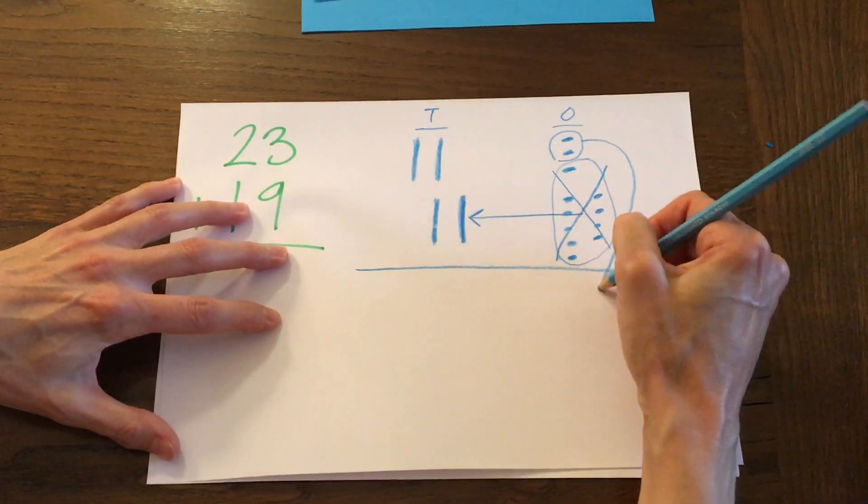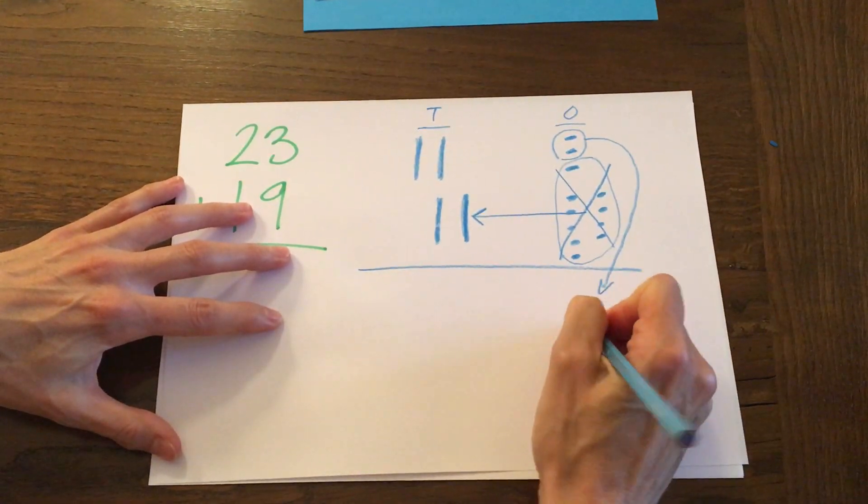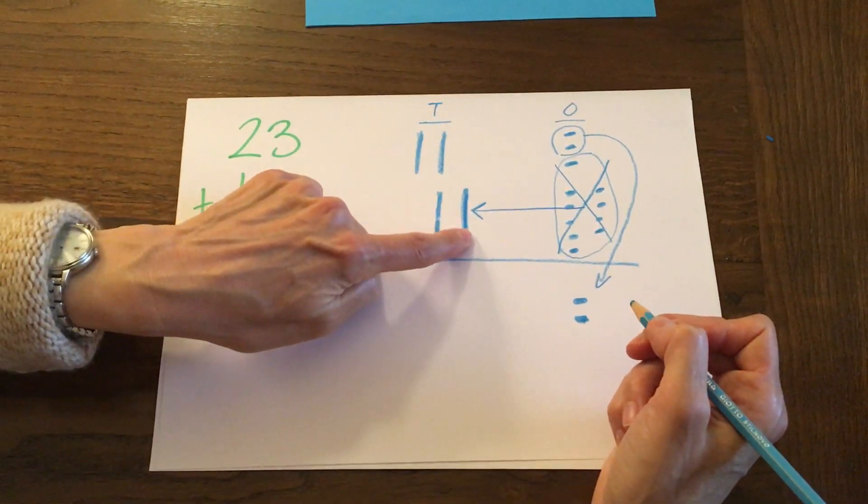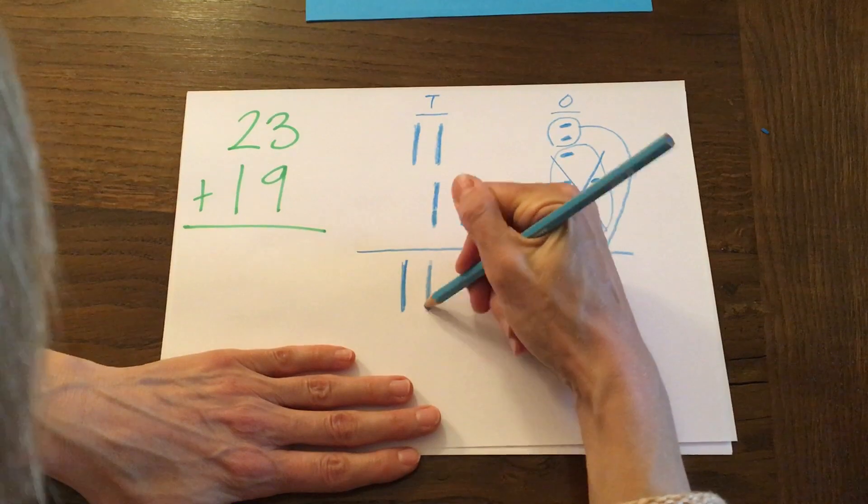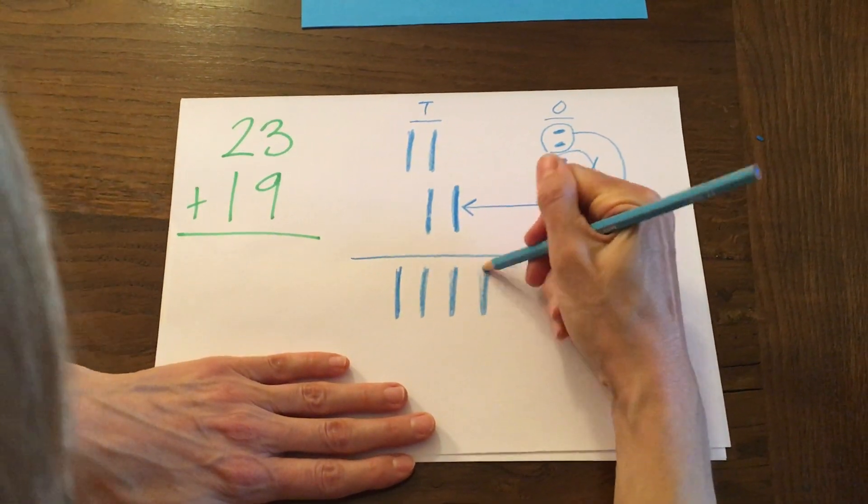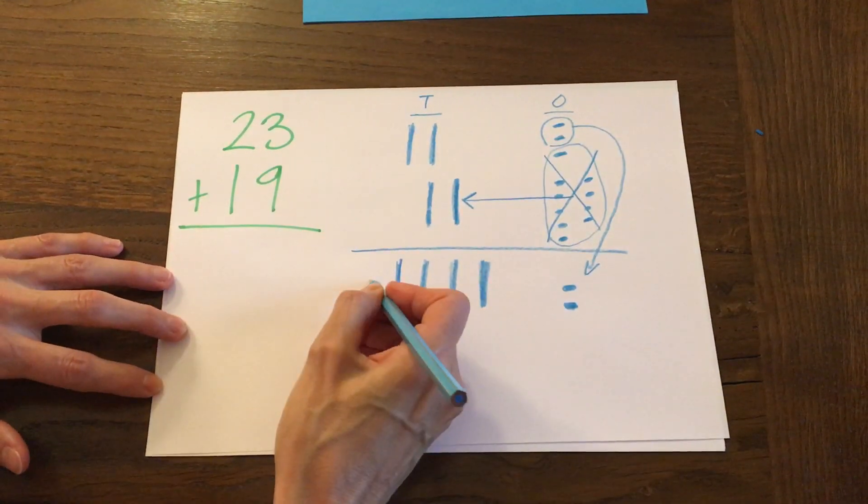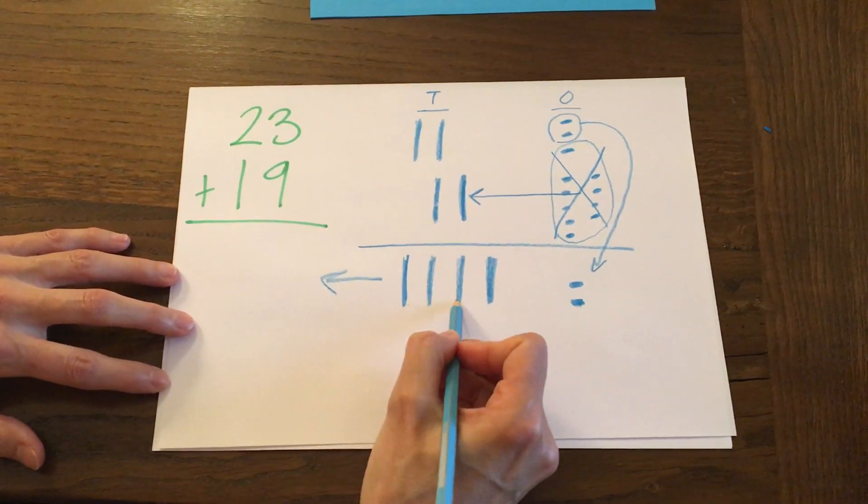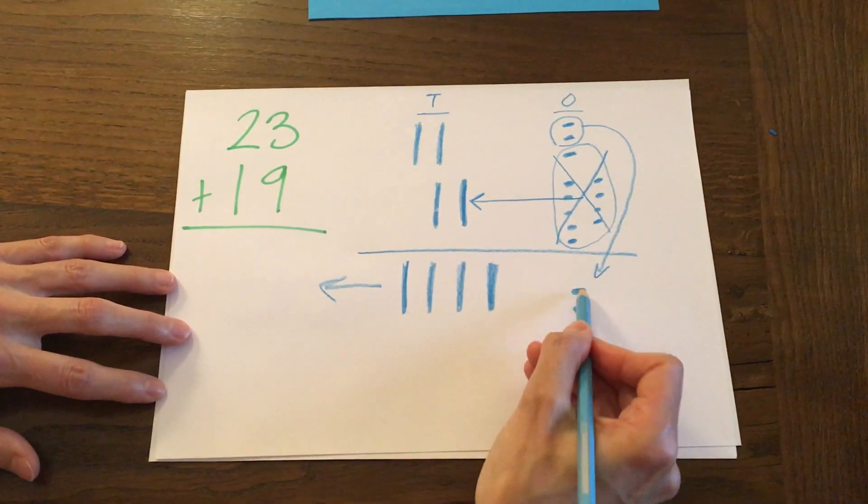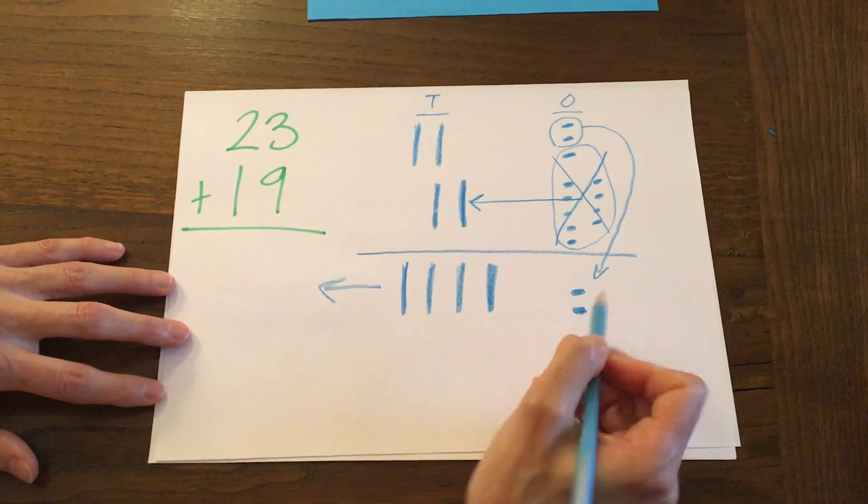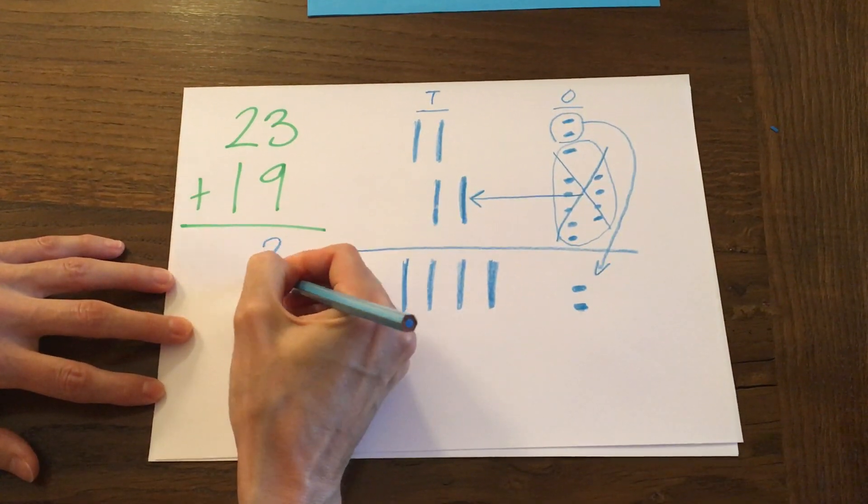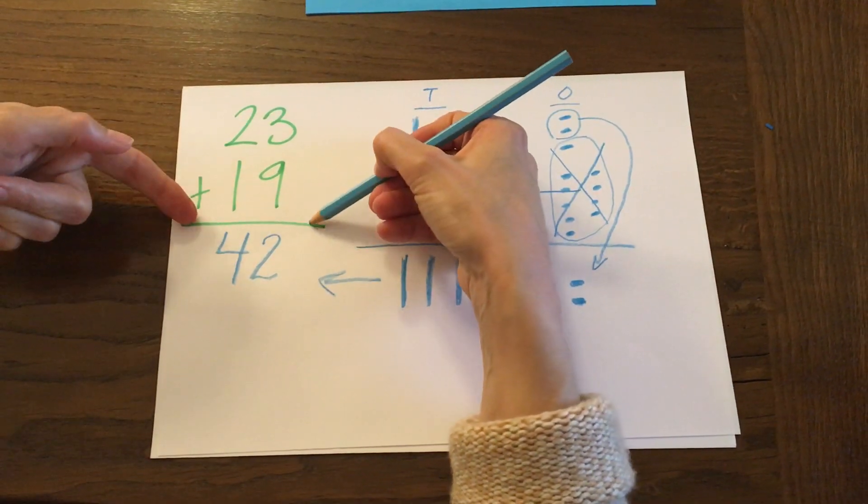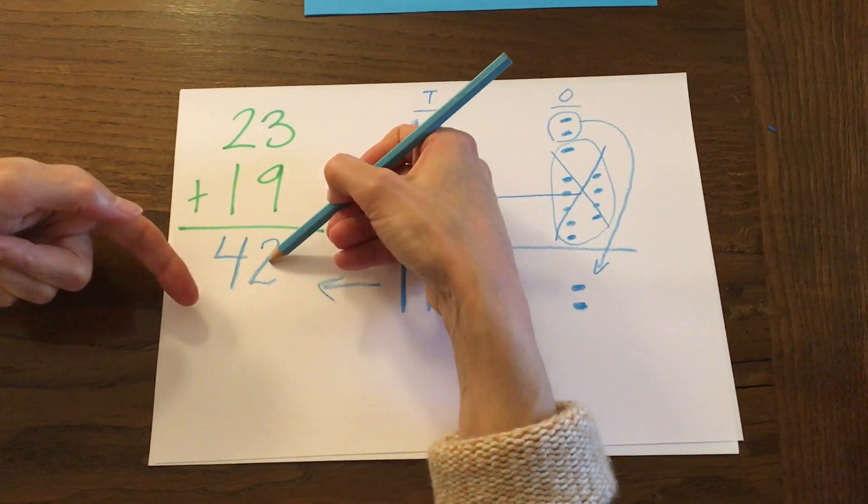These guys go down here. Two ones. And let's bring all our tens down. 10, 20, 30, 40. Okay. Now let's turn our picture into numbers. 10, 20, 30, 40, 41, 42. Two ones and four tens. 23 plus 19 equals 42.